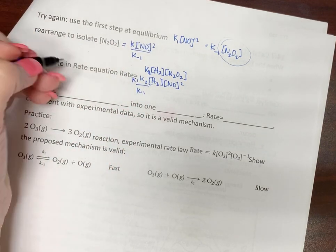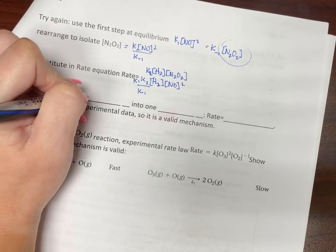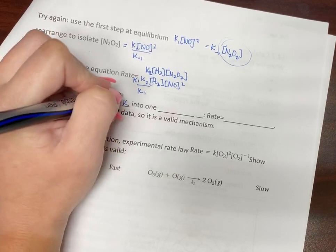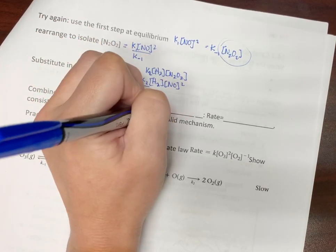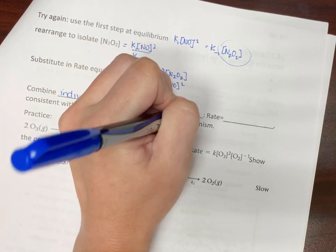Now, all of our individual K's, these are all just numbers. So we combine them into one overall K.